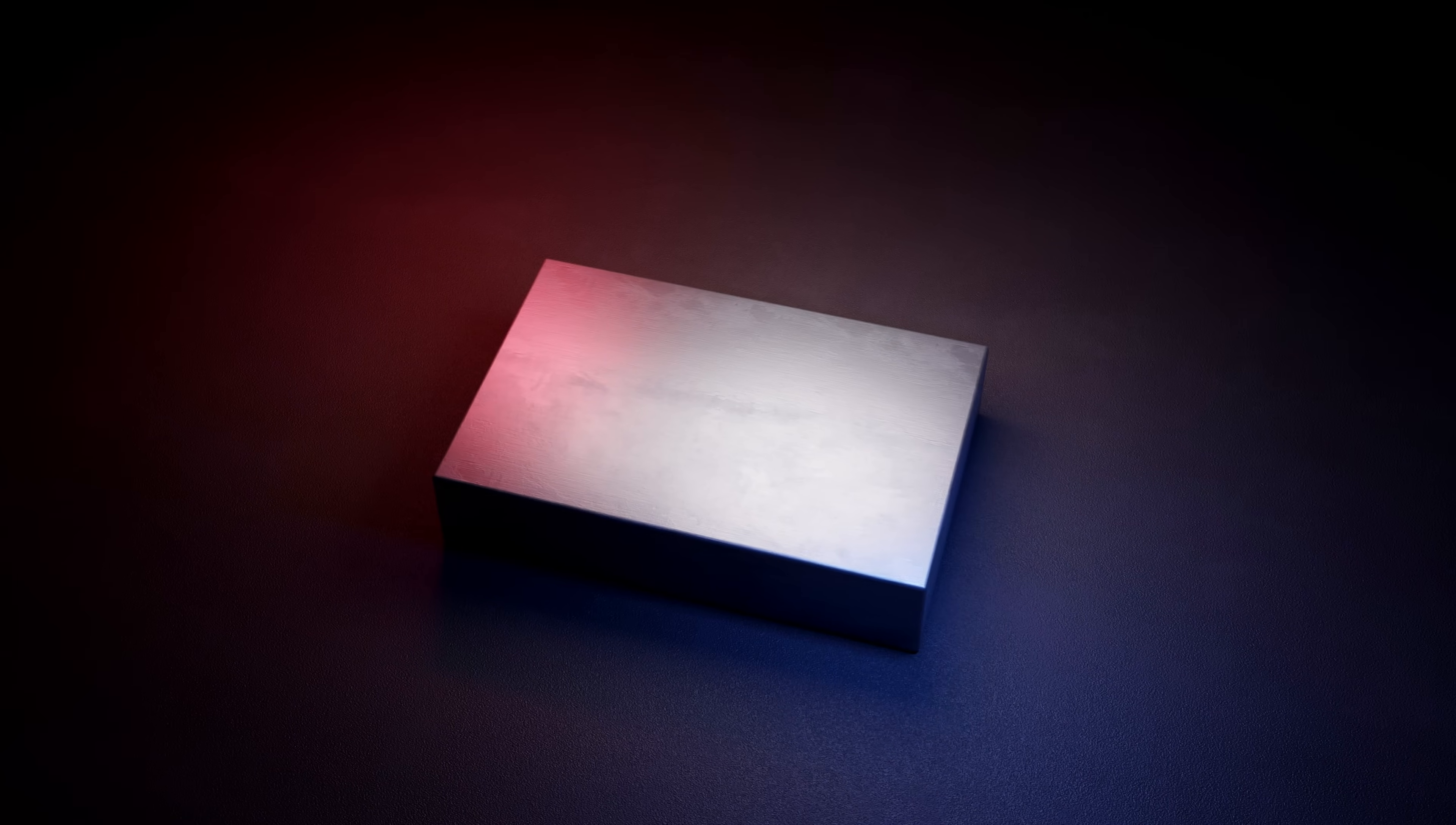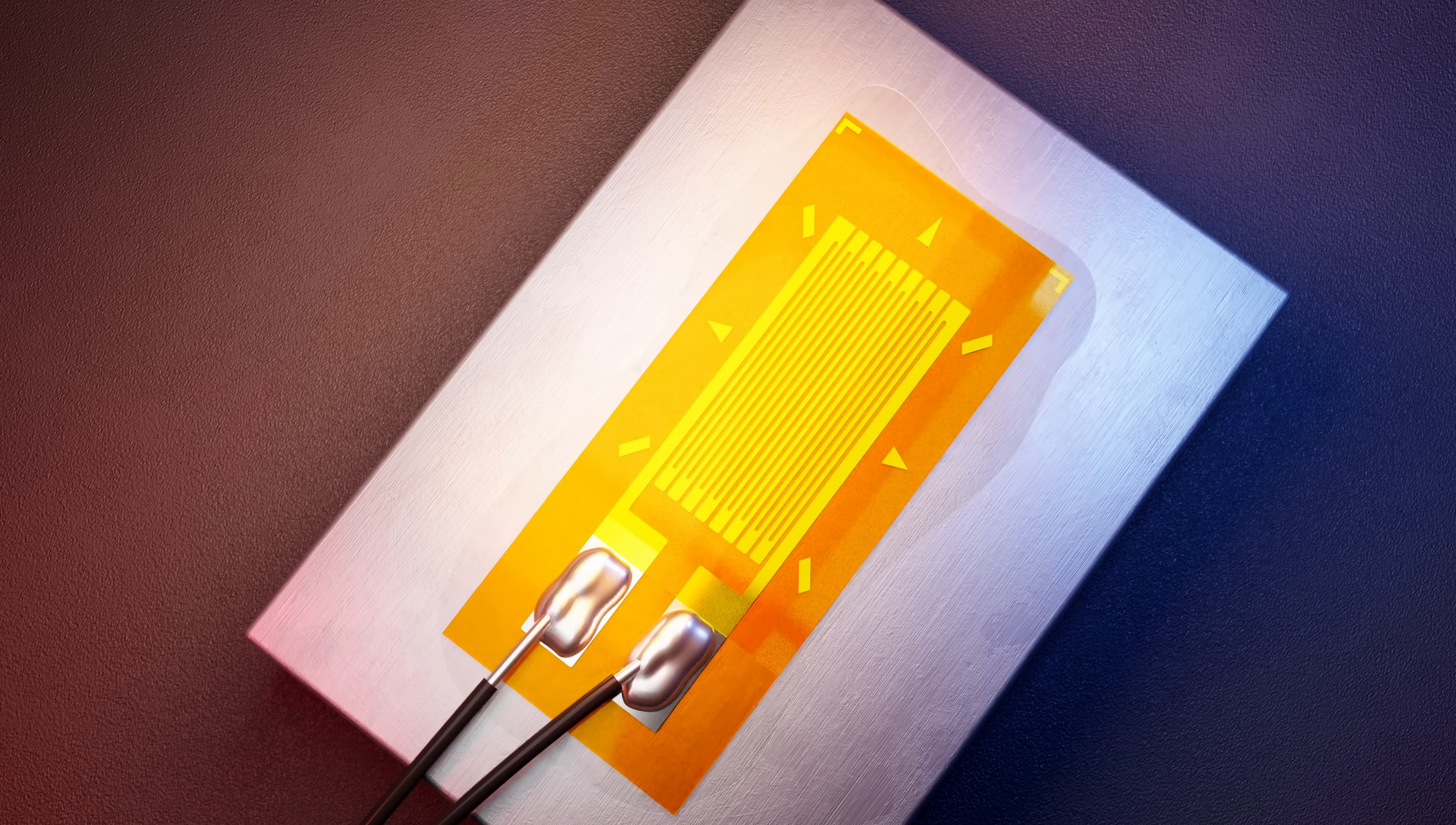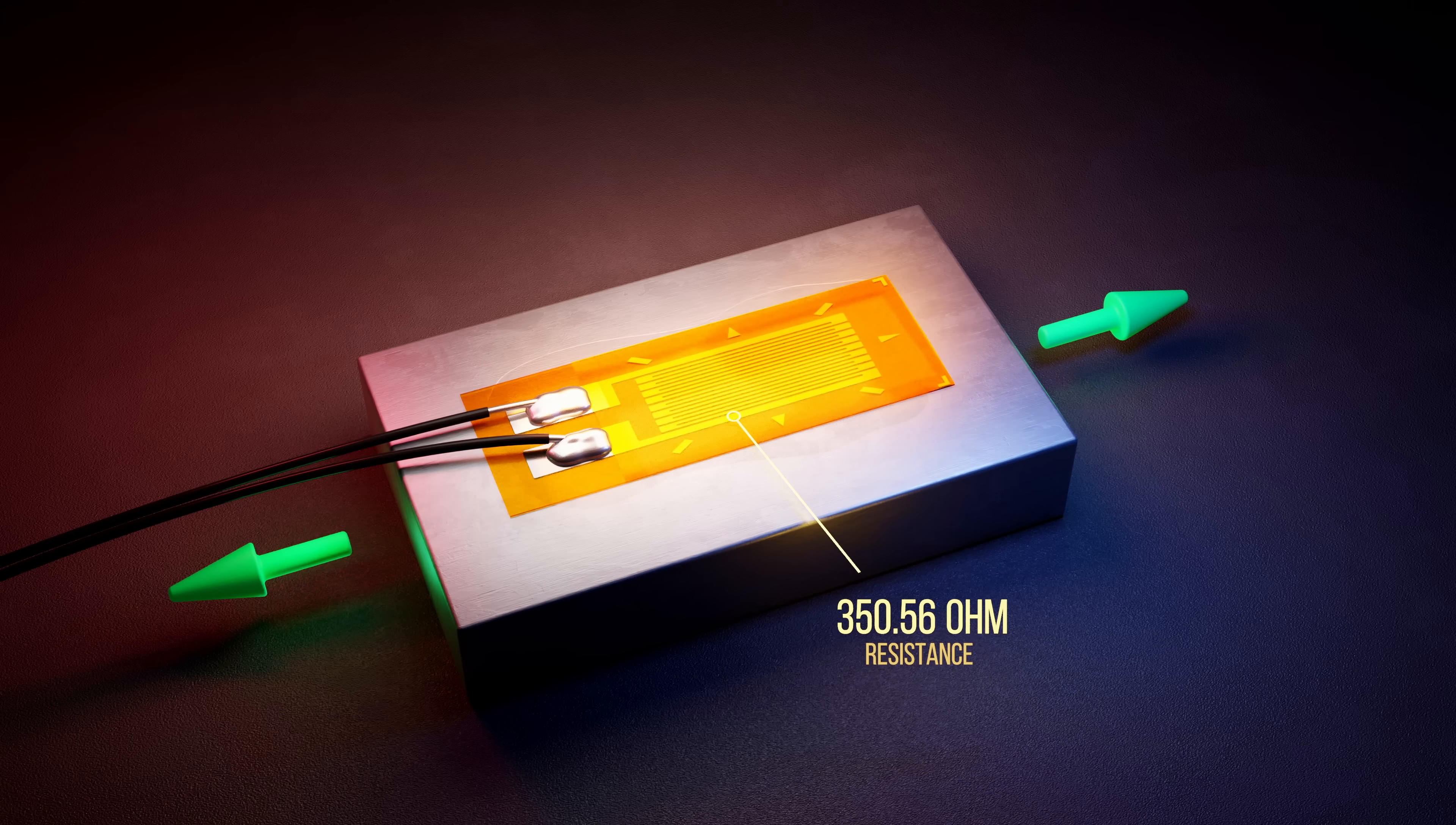These strain gauges are carefully bonded to the surface of the object being monitored, and work on the principle that the electrical resistance of a conductive material changes as it deforms. As the object stretches or compresses, the bonded strain gauge does the same. By measuring the change in electrical resistance across the gauge, we can accurately determine the object's change in length, and so the strain on its surface.